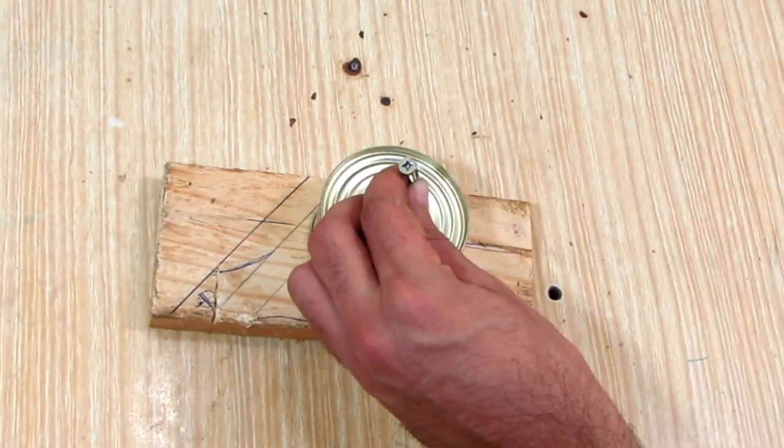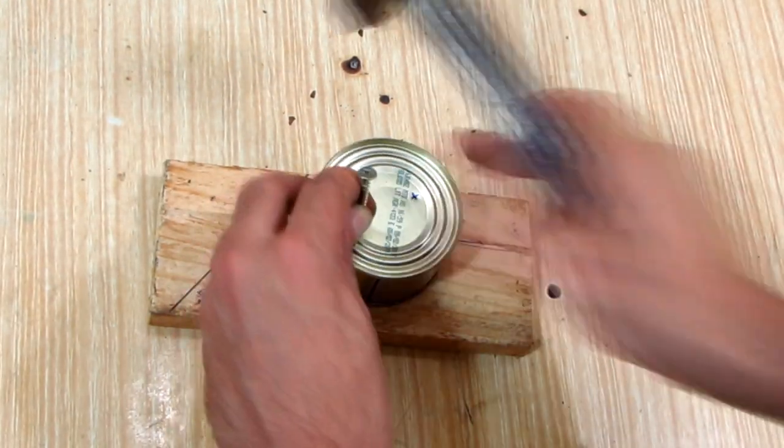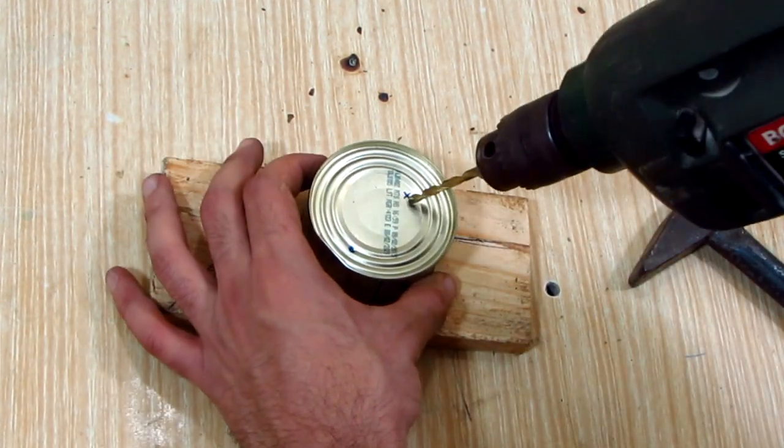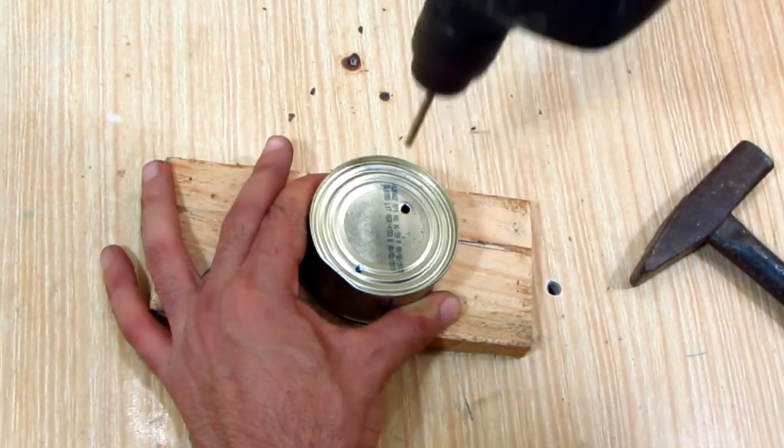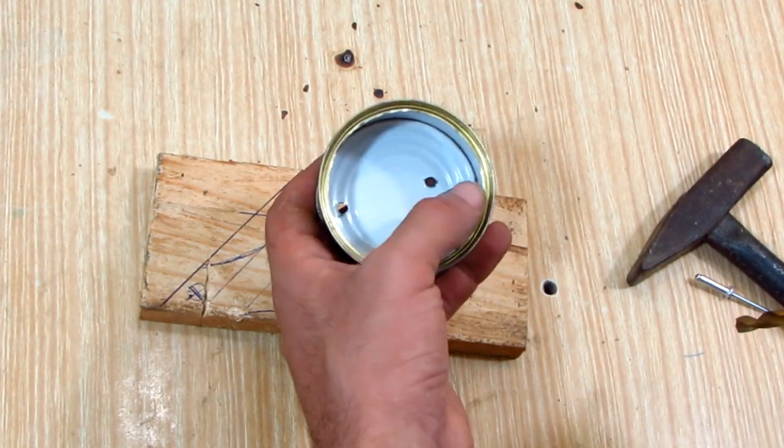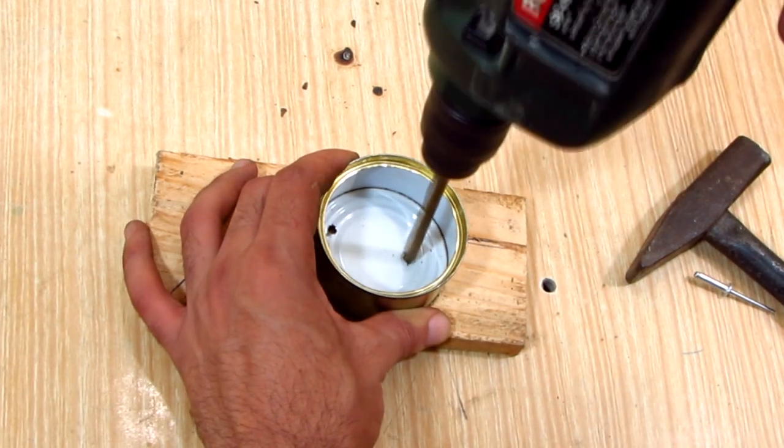To make the holes for the rivet and the female jack I centered their location with a wood screw. Then I drilled them with a 4mm drill bit, then I enlarged the female jack hole with a 6mm drill bit and deburred it.